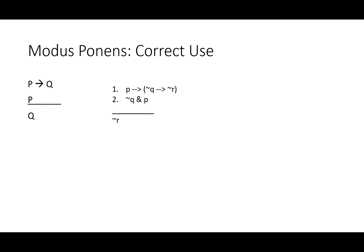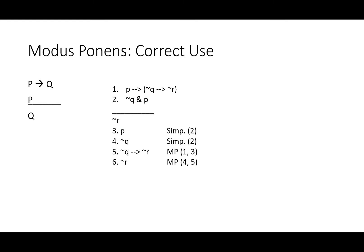Here's a slightly more complicated example: if P then (if not Q then not R), not Q and P, therefore not R. We simplify P and simplify not Q, as we'll need both. Then we do modus ponens — 'if not Q then not R' is the consequent of the first conditional, and P from line three is the antecedent. Finally, we get not R: we have not Q as the antecedent of the conditional and 'if not Q then not R' as the conditional, so we derive the consequent not R.